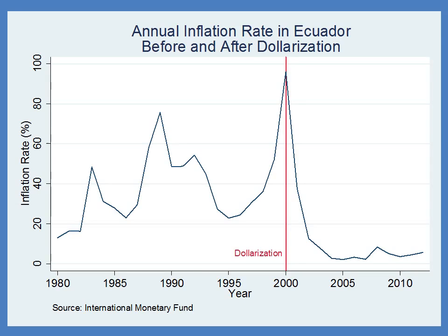So what was going on? Basically, the Ecuadorian government's finances were out of control, and the Ecuadorian central bank was simply printing too much money, generating this high inflation rate. In the year 2000, the government decided to switch over to dollars. And as you can see, immediately the inflation rate fell. The Ecuadorian inflation rate is now about the same as the U.S. inflation rate, because they share the same money.